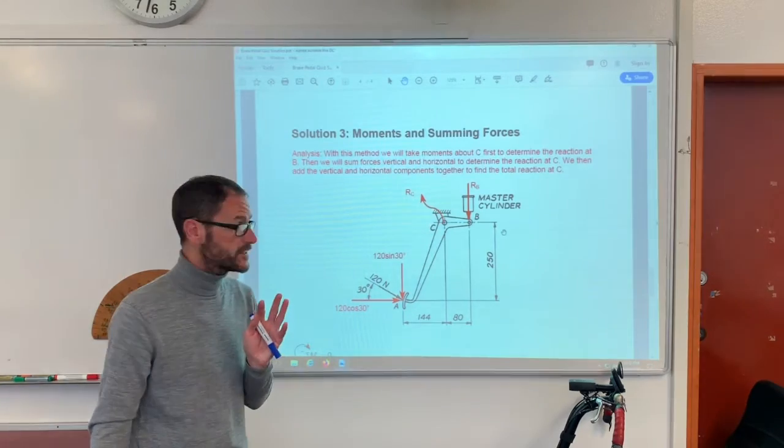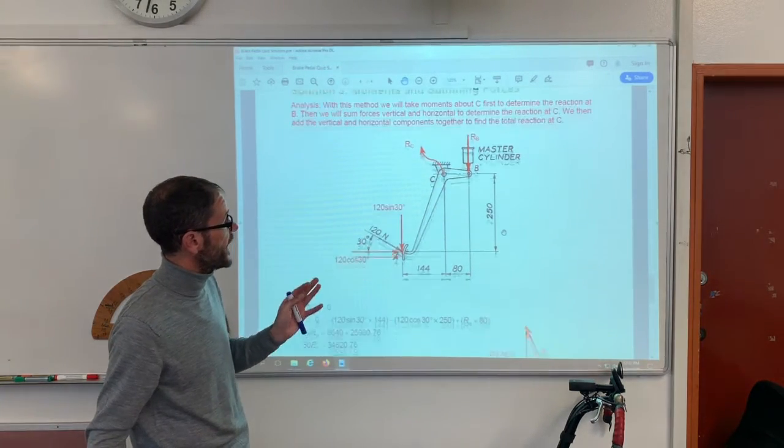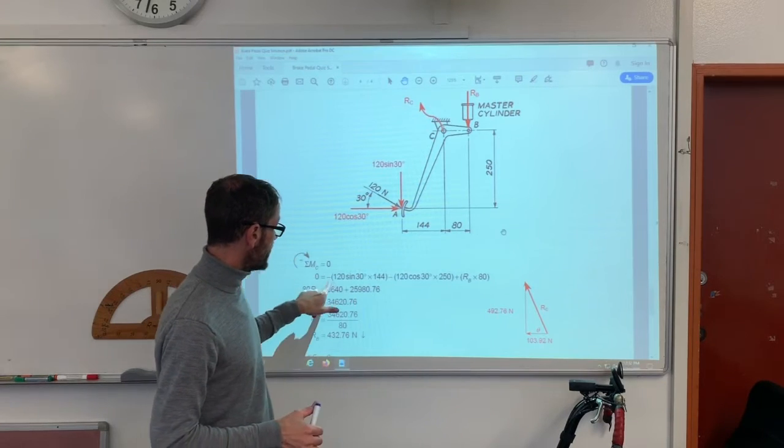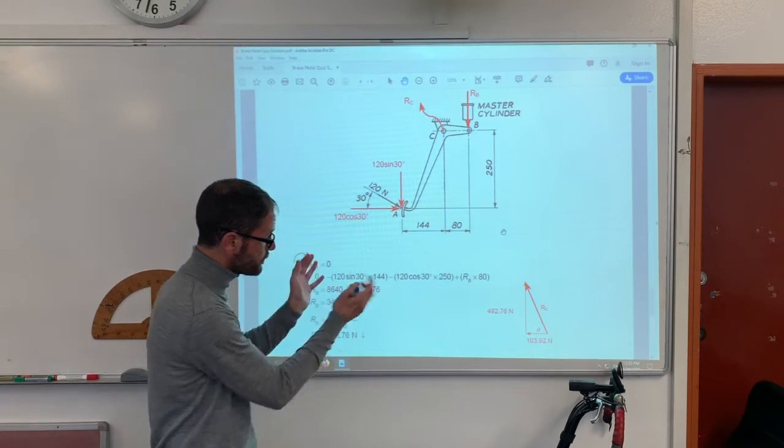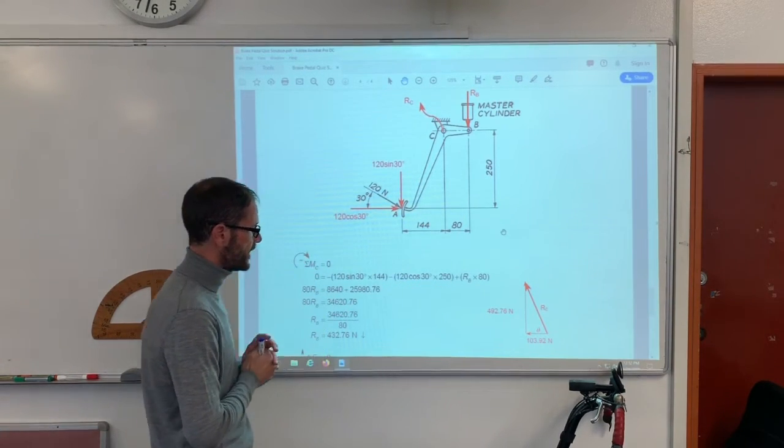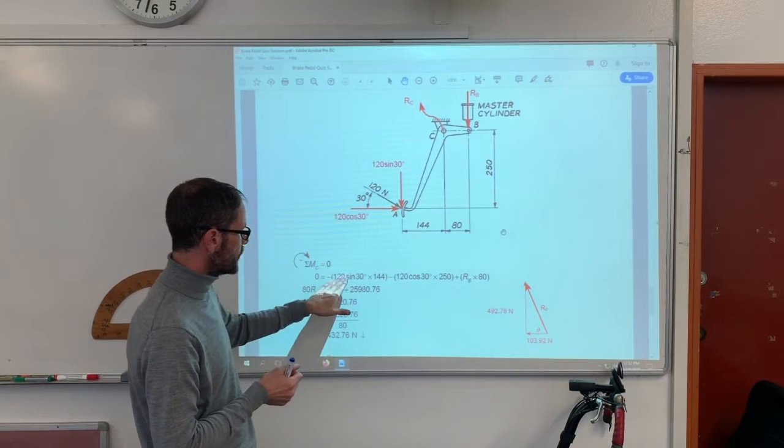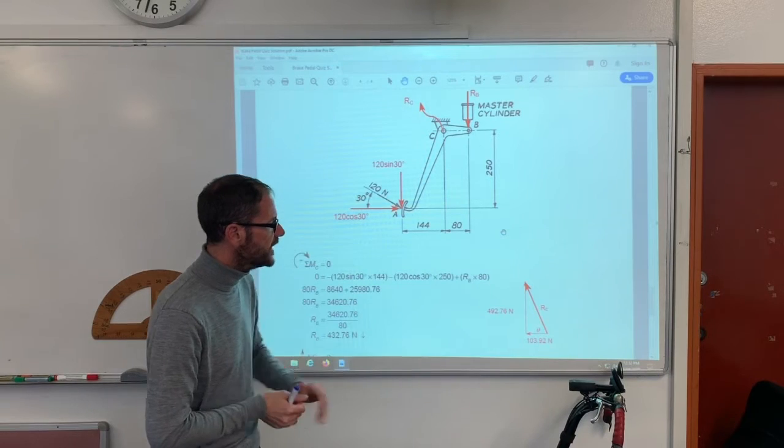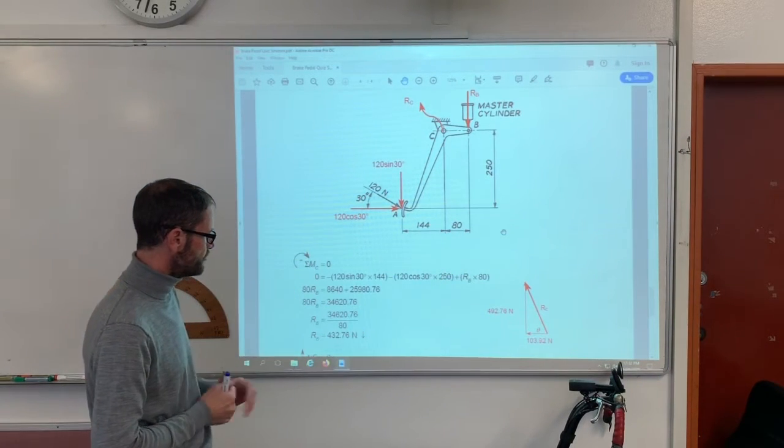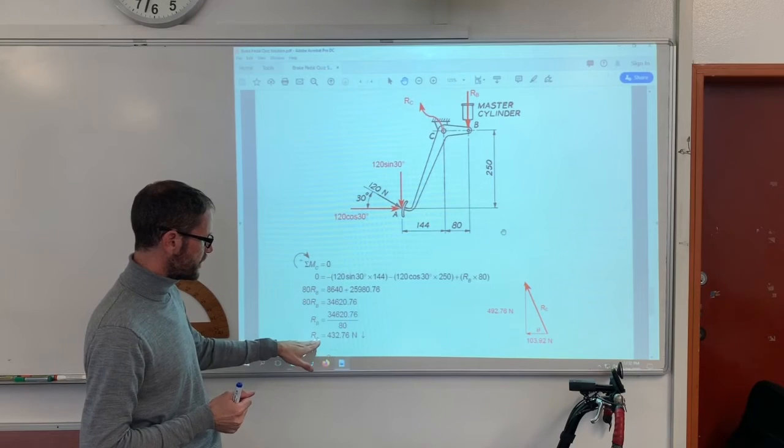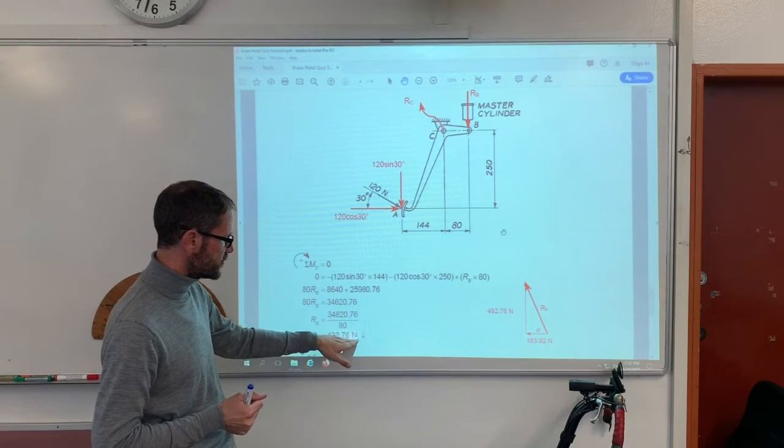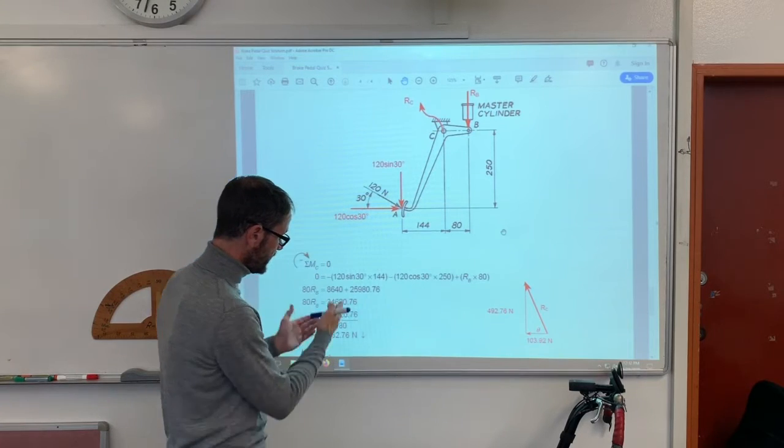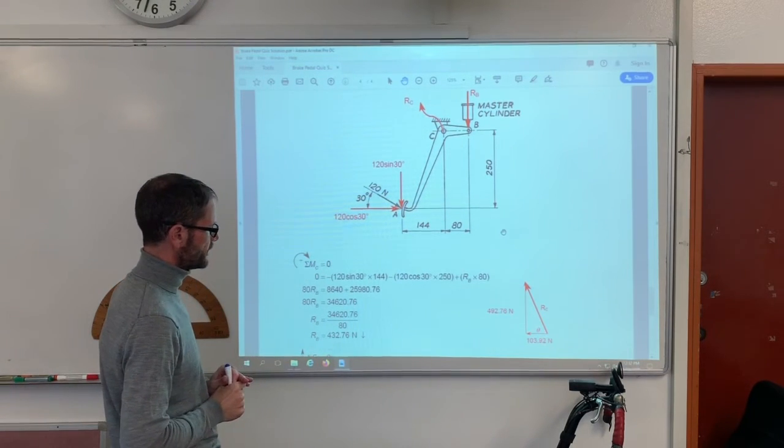So, how do we go about doing this? Well, first we're going to sum the moments about C to find the reaction at B. So, summing the moments about C, there's each of our moments put in brackets to try and separate them out and make it nice and clear. So, the vertical component times 144. The horizontal component times 250. And the reaction at B times, by that distance, 80. And what I end up with is RB 432.76 newtons going down. The reaction is going down as I've drawn in there. That's my answer found there like that.